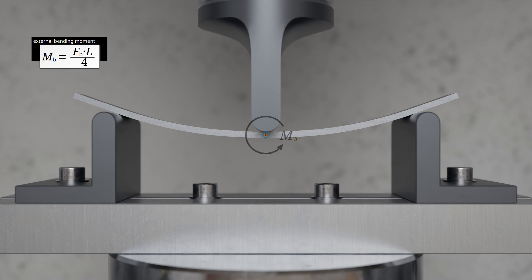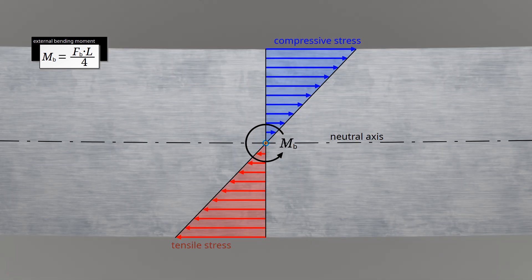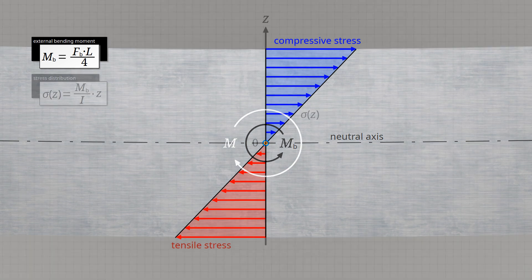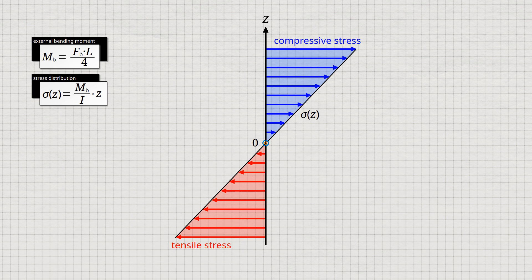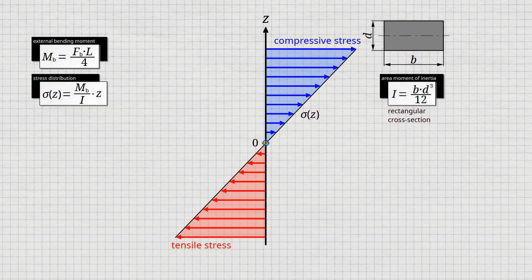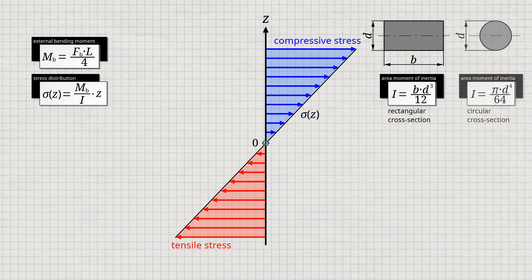The external bending moment causes a linear stress distribution across the material cross-section. In static equilibrium, the internal stress distribution generates a torque that balances the external bending moment. Using this equilibrium and assuming a linear stress distribution, a relationship can be established between the acting bending moment Mb and the stress sigma resulting at a distance z from the neutral axis. The influence of the cross-section geometry is taken into account by the area moment of inertia I, also referred to as the second moment of area. For a rectangular cross-section, the area moment of inertia depends only on the height and width. For a circular cross-section, the second moment of area is determined by the diameter only.